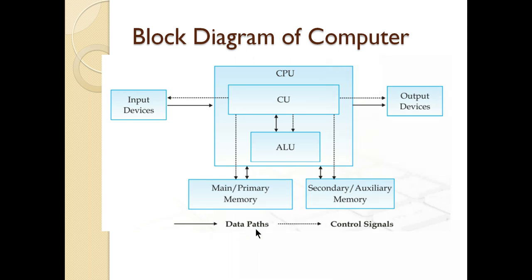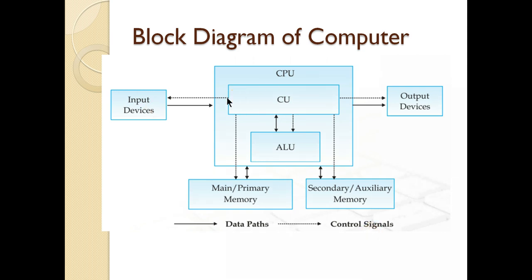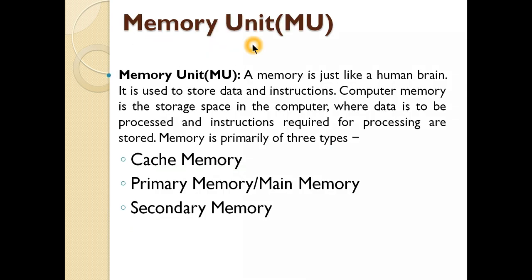This is the block diagram of the computer. The dark lines show the data flow — how data is moving in your computer system. Through the input device we give data to the CPU. Then the CU sends it to the ALU for calculation or processing work, and at the same time the same data goes to memory devices for saving. After that, finally data goes to the output device. The dotted lines are control signals — the CU is controlling the input device, memory device, ALU, and output device. The CU is the only unit controlling the overall working.